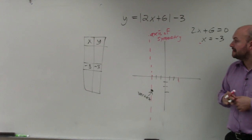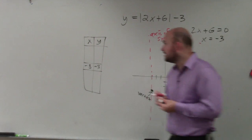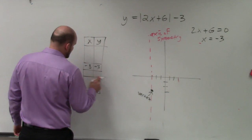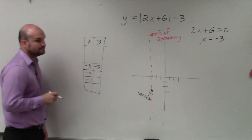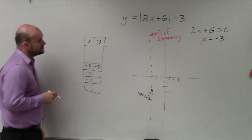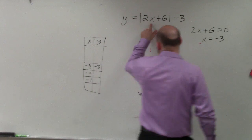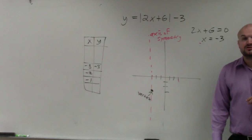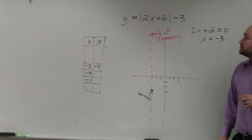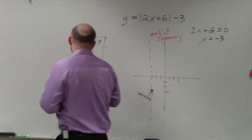Now we're just going to pick points to the left and to the right. So I'll just pick two points. Let's just pick negative 2 and negative 1. So if I plug in negative 2, 2 times negative 2 is negative 4. Negative 4 plus 6 is 2. Absolute value of 2 is 2. 2 minus 3 is negative 1.